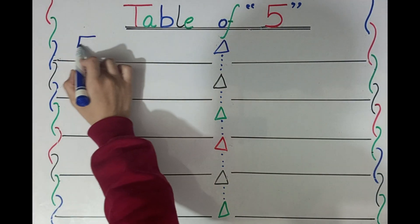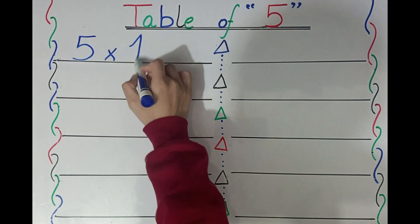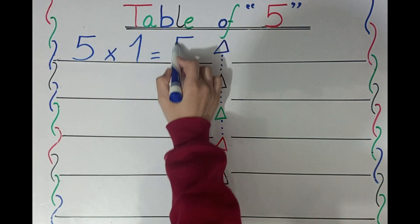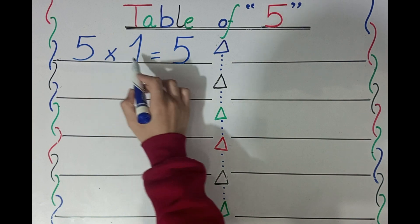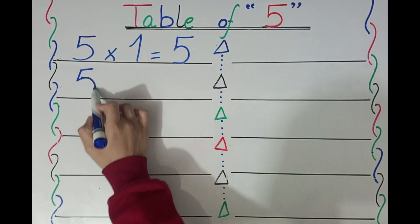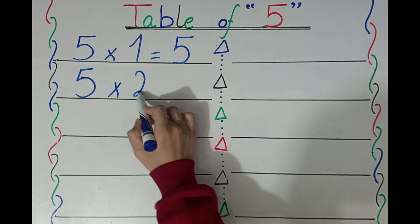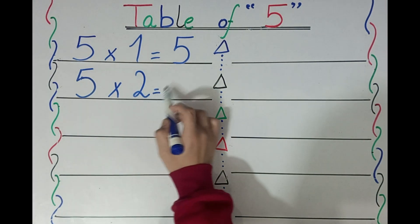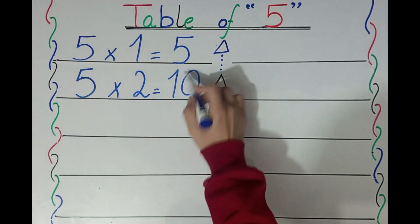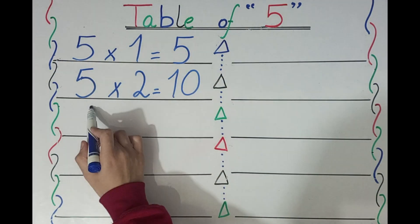Five ones are five. Five ones are five. Five twos are ten. Five twos are ten.